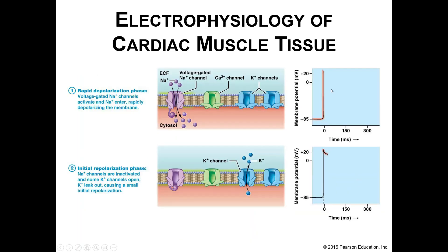Your cardiac conduction system is coming up, but let's quickly review action potentials. Cardiac muscle action potentials work just a tiny bit differently than skeletal muscle contraction. The first step is the same: rapid depolarization through opening voltage-gated sodium channels. A bunch of extracellular sodium rushes inside your cardiac cells, and the membrane potential goes from about negative 85 up to about positive 20. That part should sound pretty familiar.